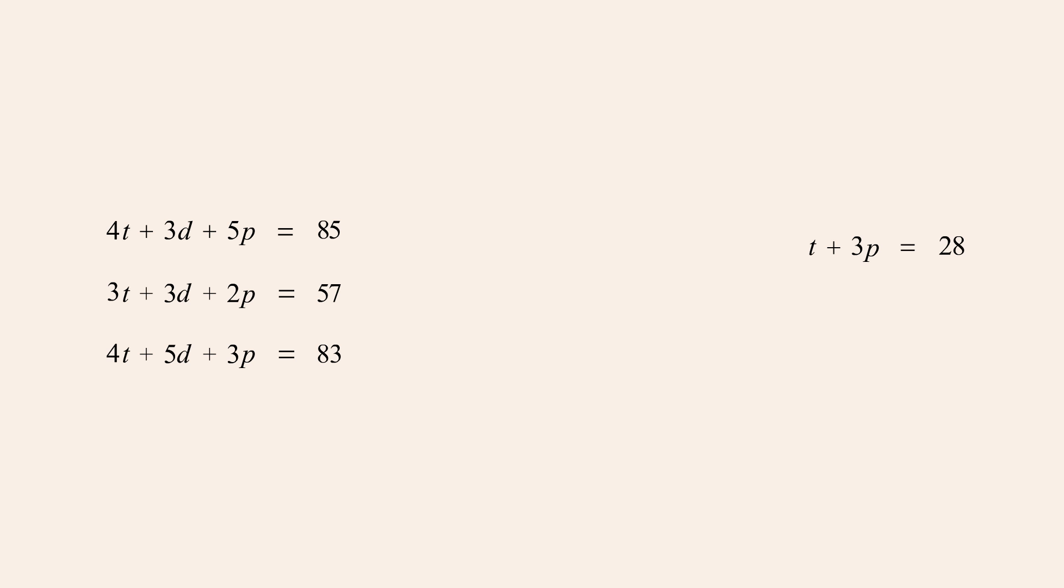Now we eliminate d again using a different pair of equations. For example, this time we could choose the first and third equations. Using these equations to eliminate d, we multiply the first equation by five and the third equation by negative three. We then complete the arithmetic.